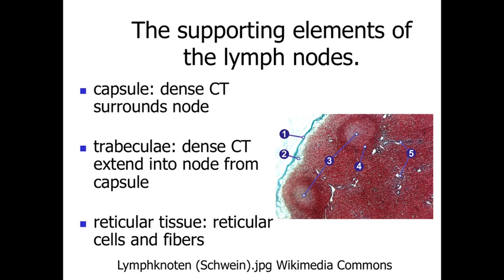Looking at the overall structure of the lymph node, we're going to have a dense connective tissue capsule surrounding the entire organ. Extensions of that capsule are going to be trabeculae, extending down into the lymph node. In between that, we're going to have reticular connective tissue — reticular cells and reticular fibers — forming a jungle gym type structure, which allows for open spaces for cells to migrate through the region, as well as lymph and tissue fluids to percolate through this area relatively easily.